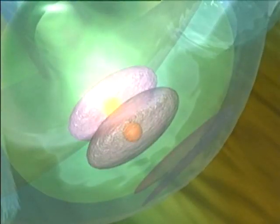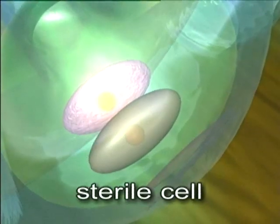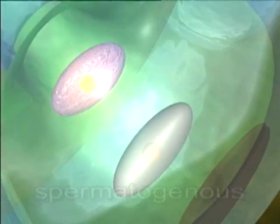The generative cell soon divides, forming a sterile cell and a spermatogenous cell. Both of these then move into the growing pollen tube.